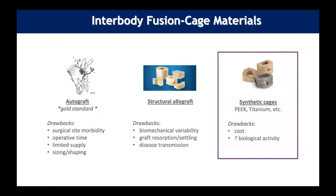Autograft has been the gold standard; structural allograft has also been used. More recently, synthetic cages such as PEEK and titanium are being used. Drawbacks of autograft include surgical site morbidity, operative time, and limited supply. Synthetic cages can have increased cost and differences in biological activity that need to be considered.